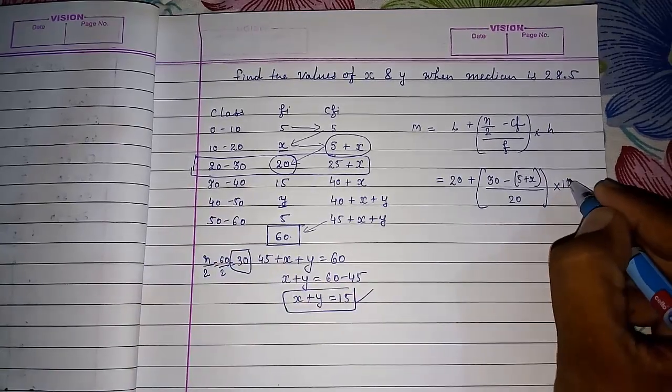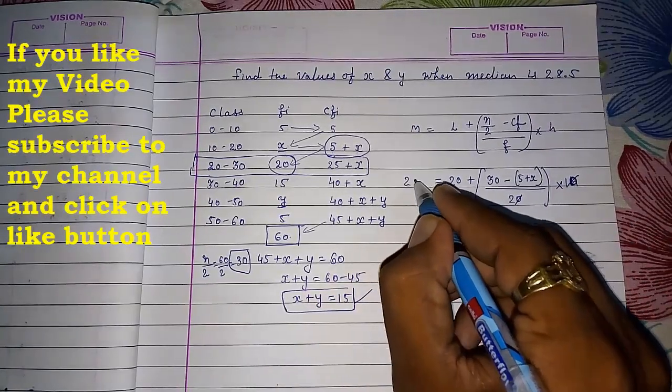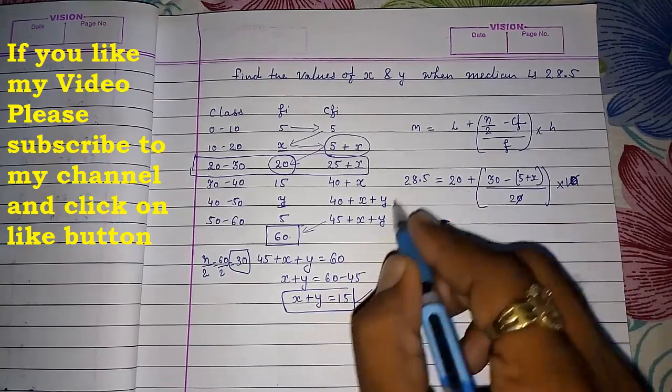I'm sorry. So 20, 20 cancel. And they did give us median also, 28.5. So first I will take this 20 here.